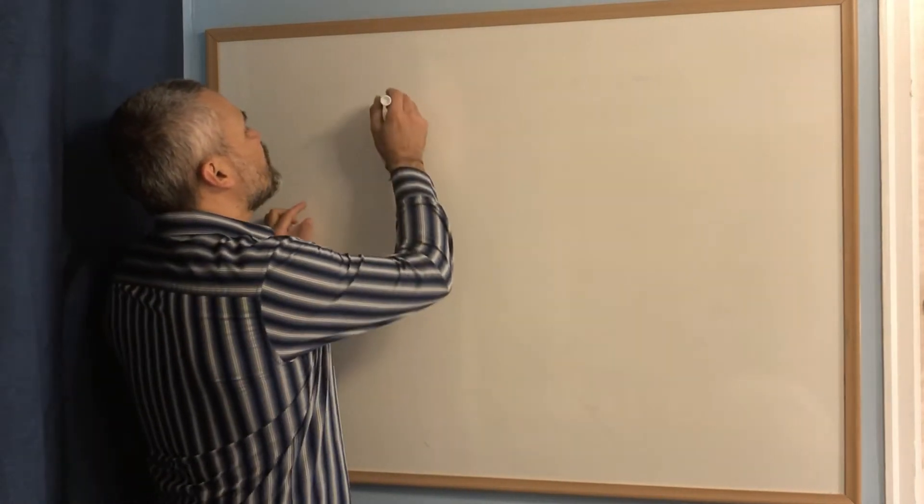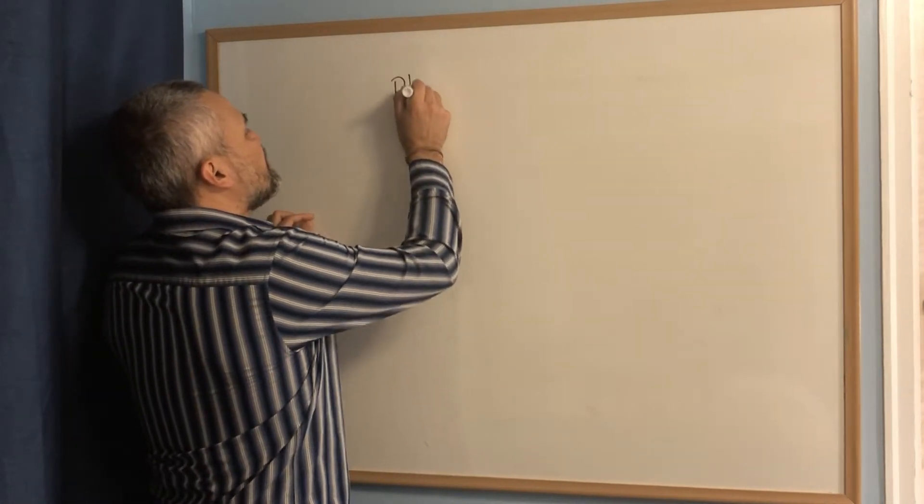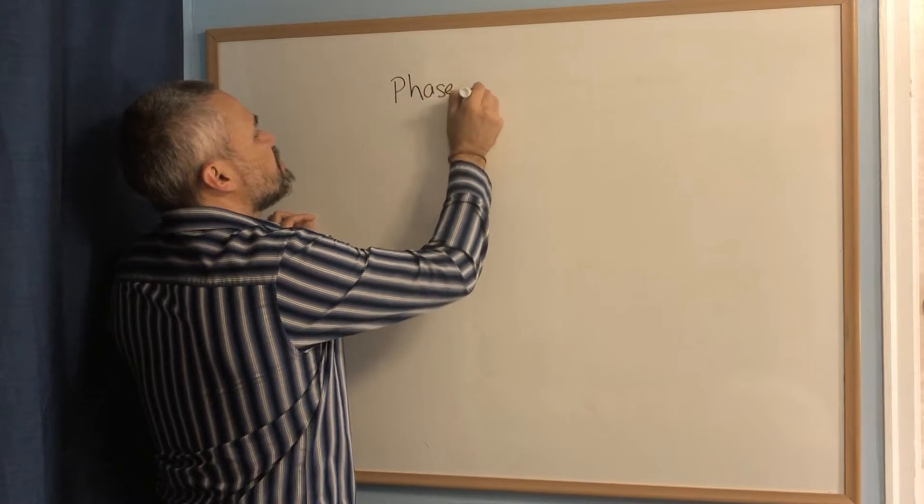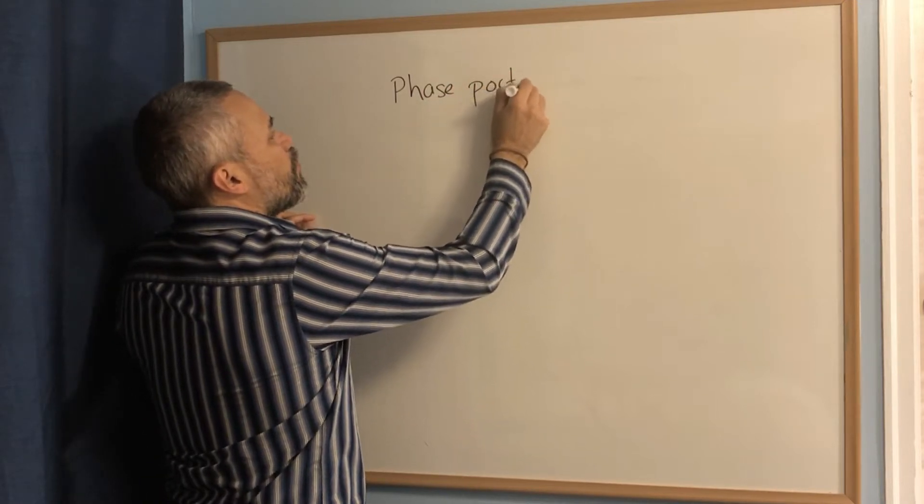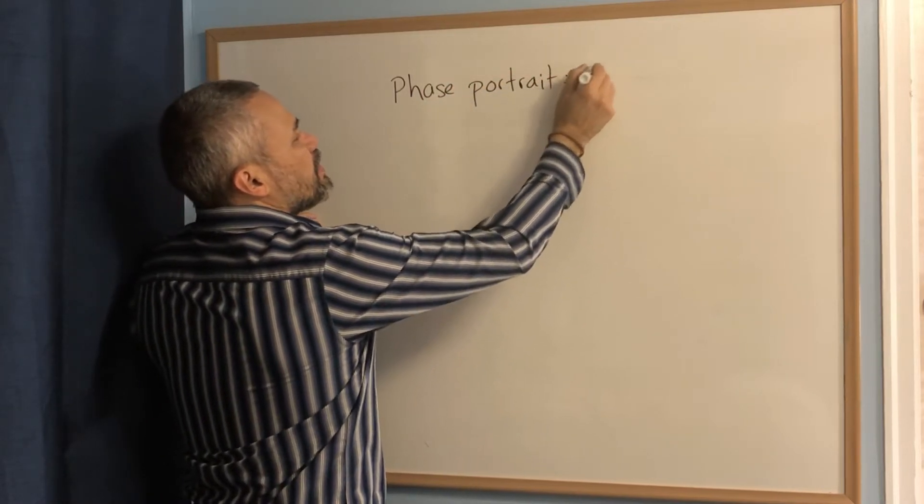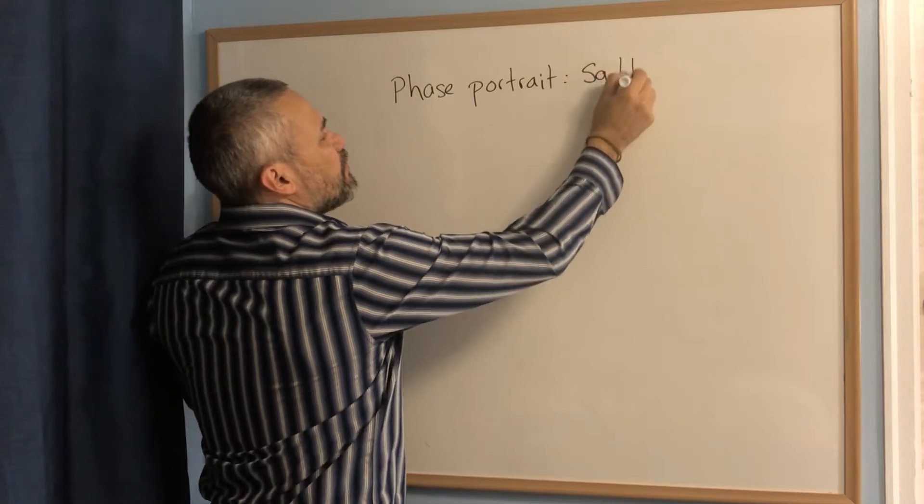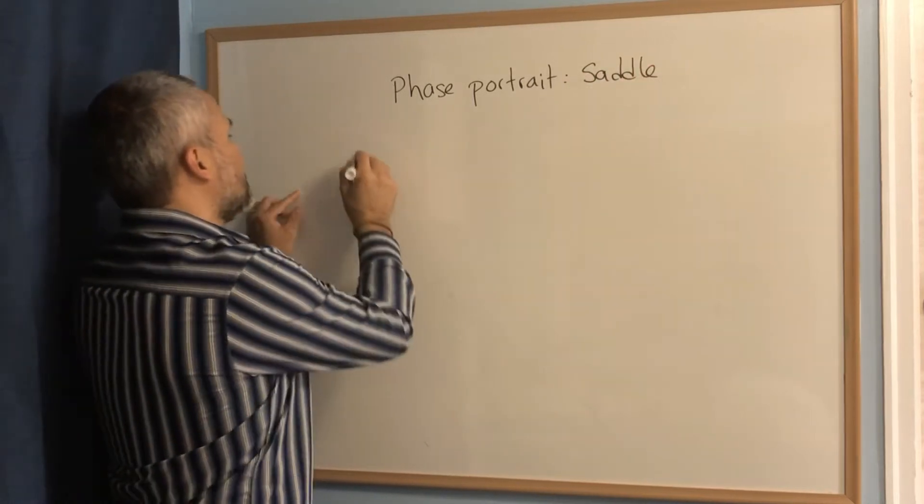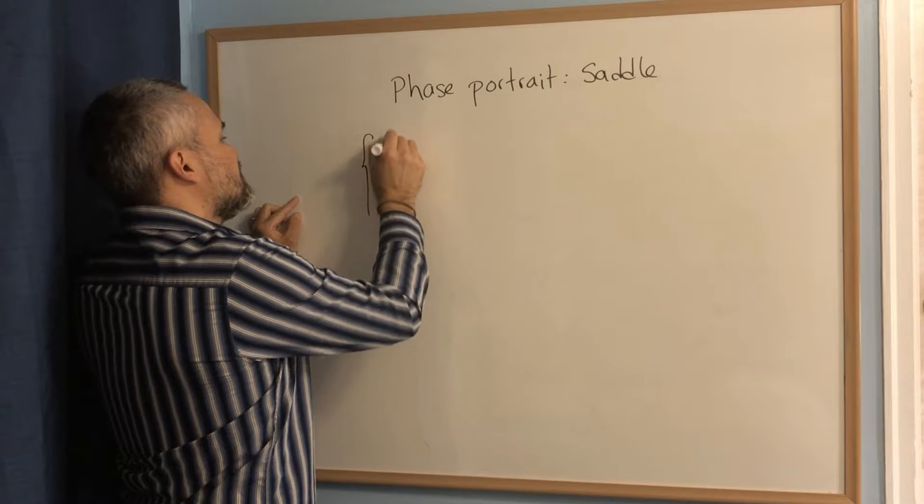In this video we will explain how to do the phase portrait when we have a saddle. Let me write that, phase portrait when we have a saddle. The linear system looks like this,